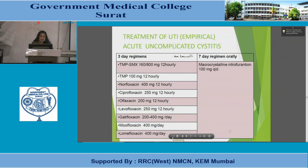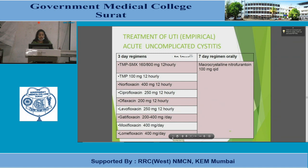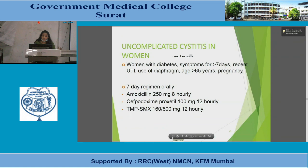The empirical treatment table for acute uncomplicated cystitis includes a three-day regimen with trimethoprim-sulfamethoxazole, trimethoprim alone, norfloxacin, ciprofloxacin, ofloxacin, levofloxacin, gatifloxacin, moxifloxacin, and lomefloxacin. A seven-day regimen includes macrocrystalline nitrofurantoin 100 mg four times a day.